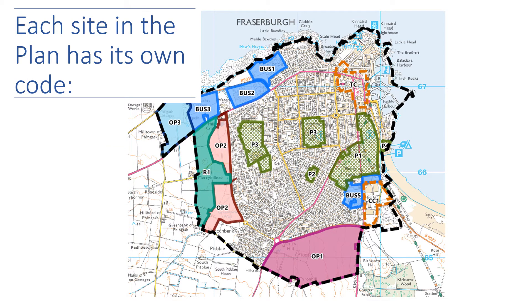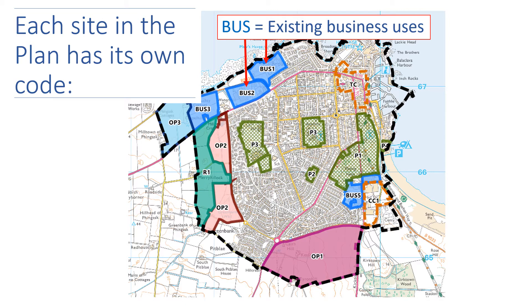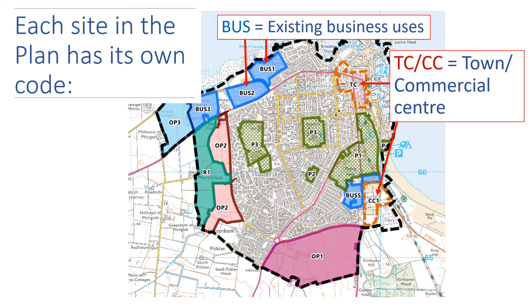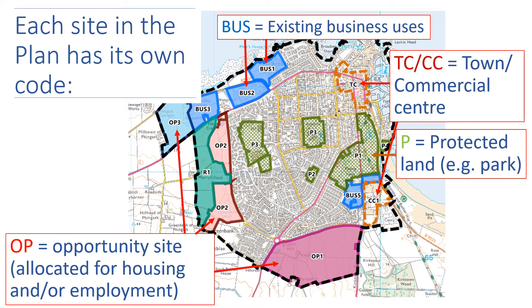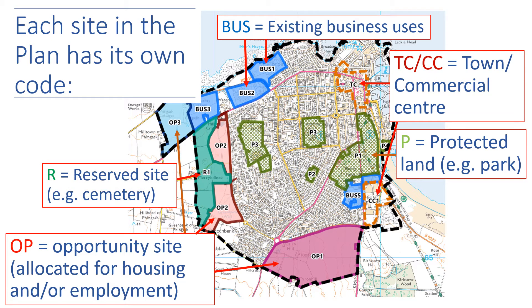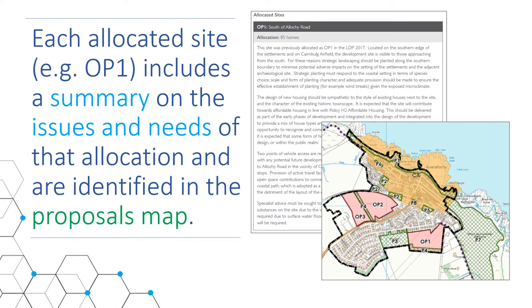We use different codes in the proposal maps depending on the intended use of the site. A BUS site is safeguarded for existing business uses. A TC or CC site is a town centre or proposed retail commercial centre outside a designated town centre. A P site is protected land such as public open space. An OP designation is an opportunity site generally allocated for housing or employment uses, and an R site is reserved for a particular use such as a cemetery. Each allocated opportunity site includes a summary on the issues and needs of that allocation, such as a master plan, transport appraisal or a flood risk assessment, and these sites are identified in the proposal maps.